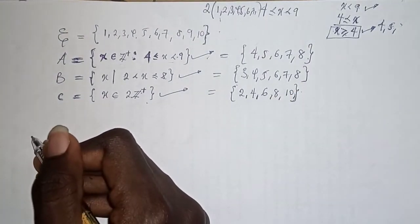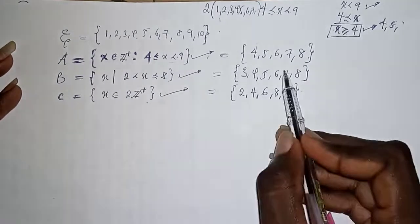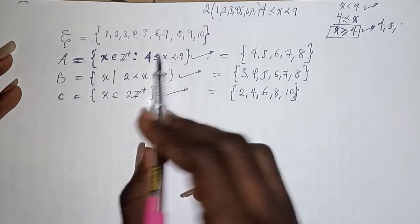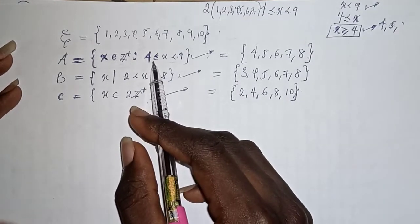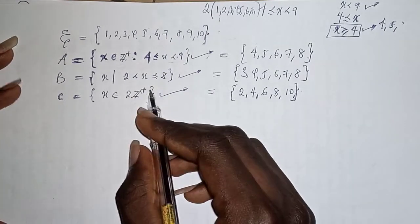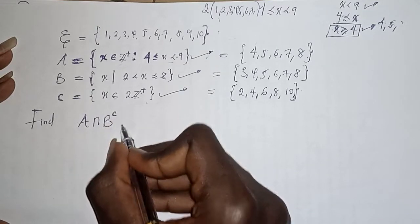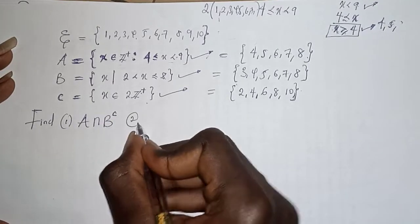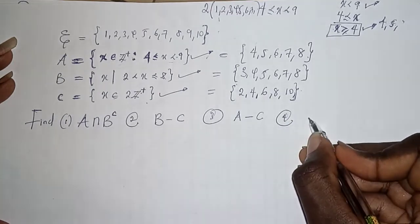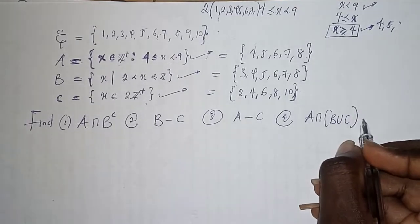What I just wanted you to note is that sometimes the members of a set will not be given directly — they will be coded and you must decode them yourself. Now, the questions are: find A intersection B complement; second, find B minus C; third, find A minus C; and fourth, find A intersection B union C.